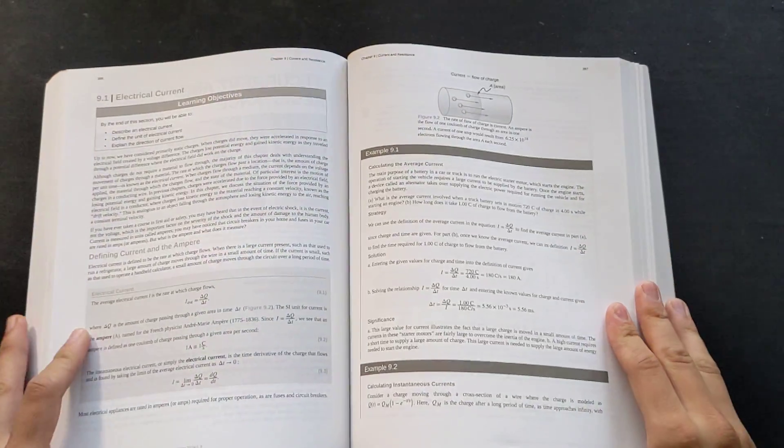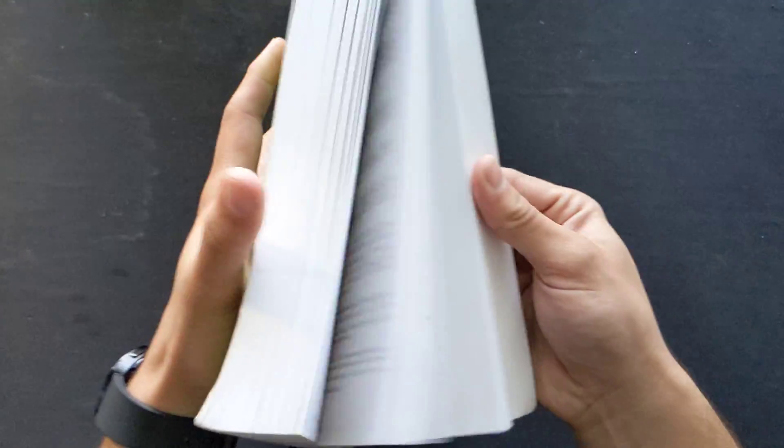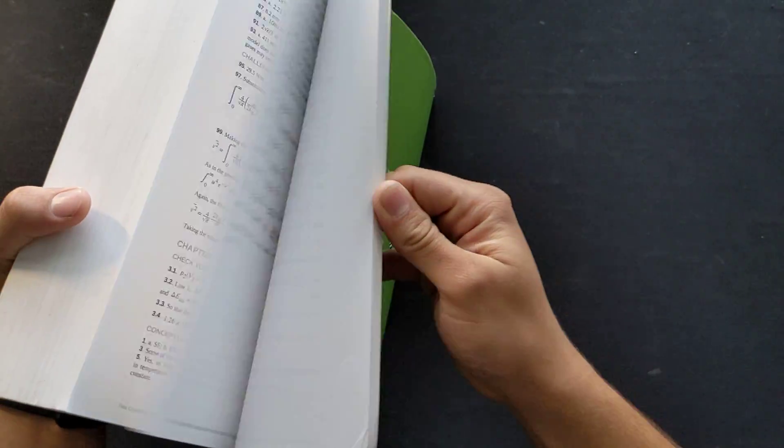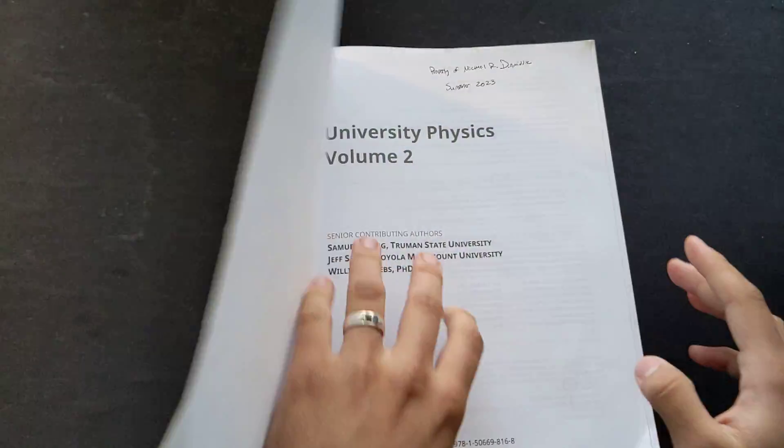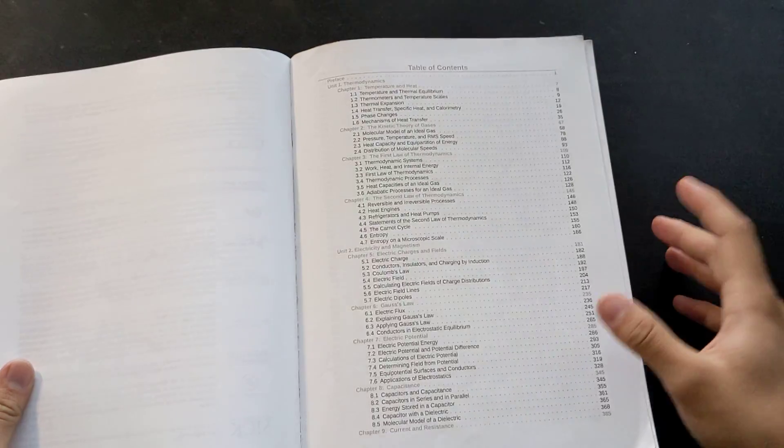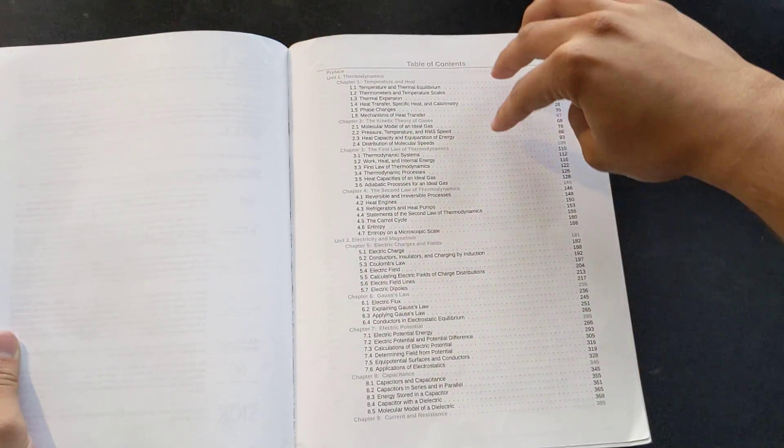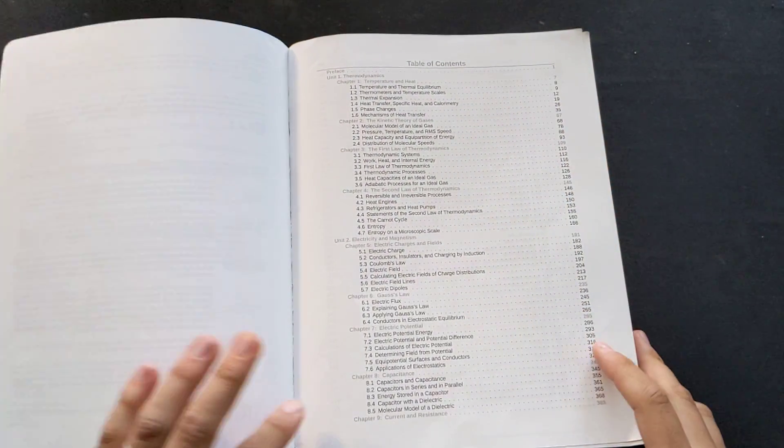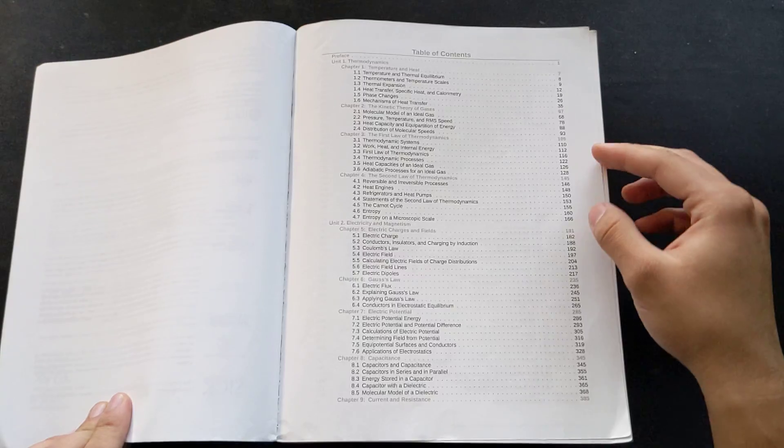But the book is absolutely fantastic and it covers quite a few things. This volume right here, all damn near 800 pages of it, are mostly about electricity and magnetism. In the very beginning here, for about 150 pages, we have some information about thermodynamics.